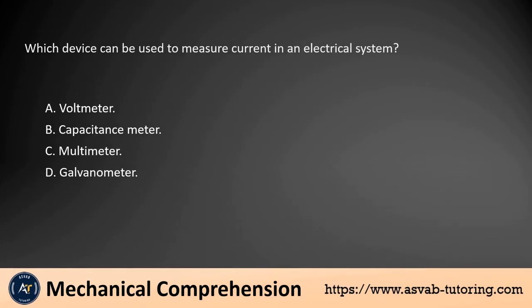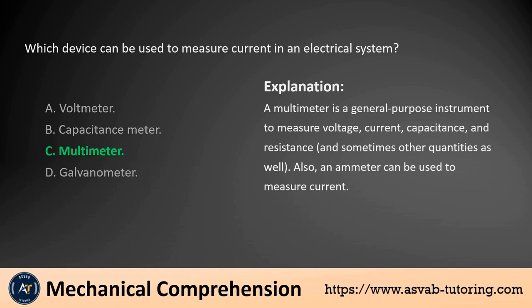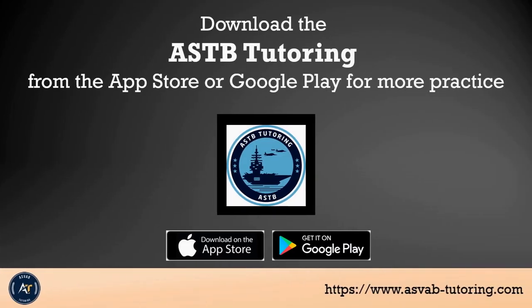Which device can be used to measure current in an electrical system? A. Voltmeter. B. Capacitance meter. C. Multimeter. D. Galvanometer. The answer is C. A multimeter is a general-purpose instrument used to measure voltage, current, capacitance, and resistance, and sometimes other quantities as well. An ammeter can also be used to measure current. Download the ASTB tutoring from the App Store or Google Play for more practice.